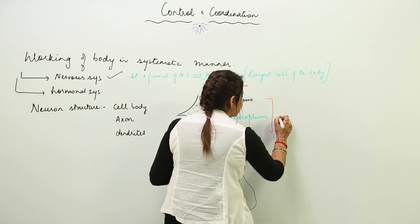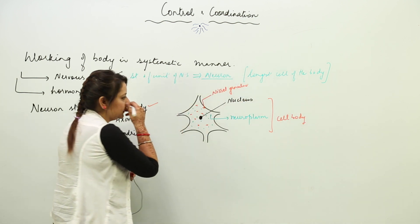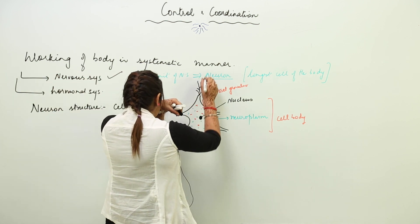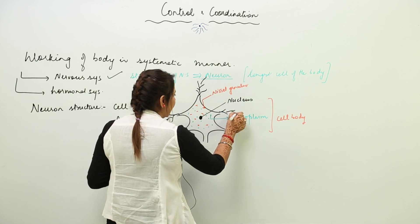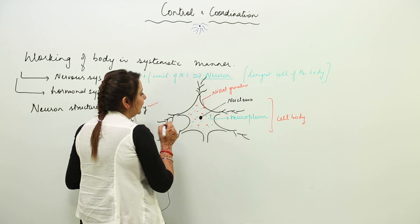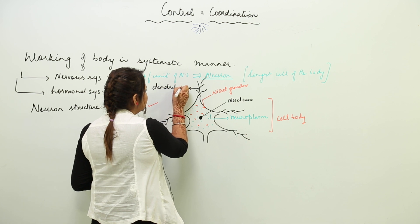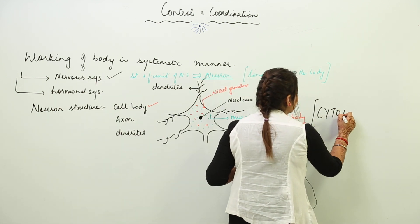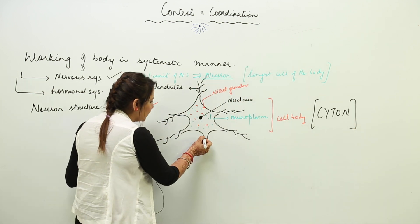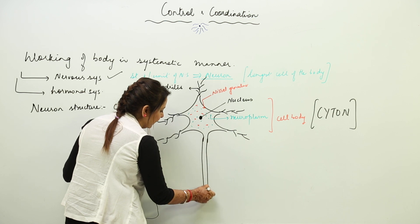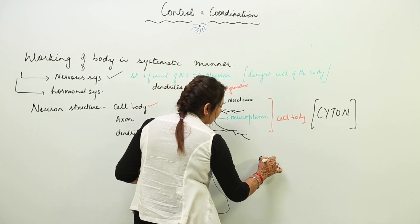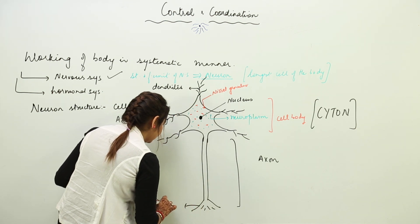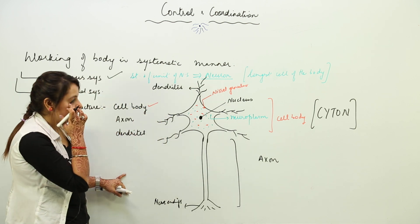This is the cell body. On the upper side it gives out small, highly branched branches — like branches of a tree — and these are called dendrites. The cell body along with dendrites is given a special name: the cyton. On the lower side it gives out only one branch which is very elongated, and this branch is called the axon.